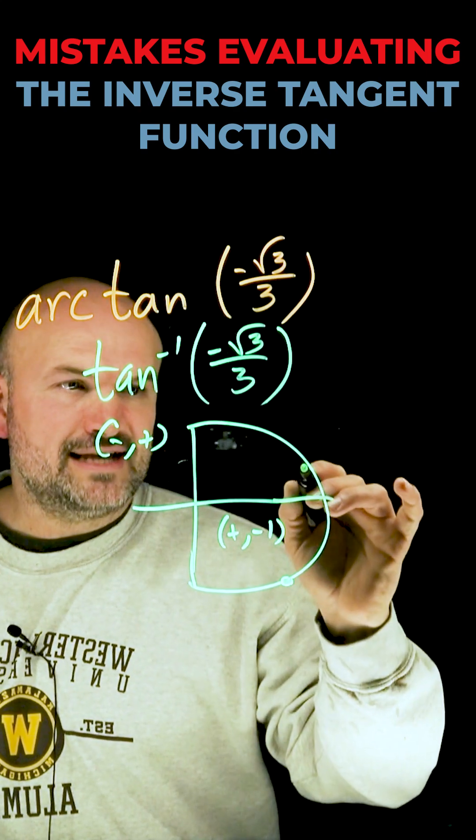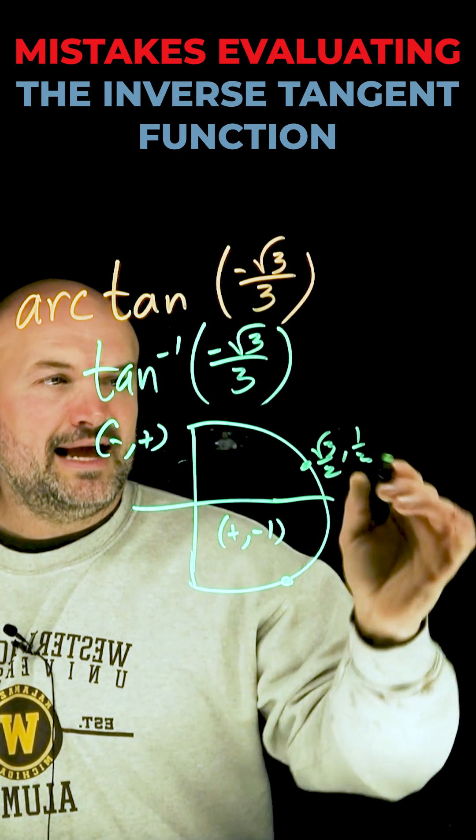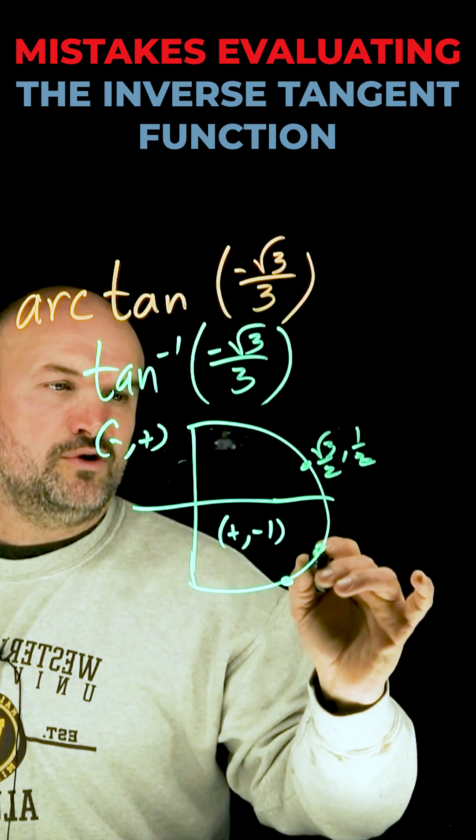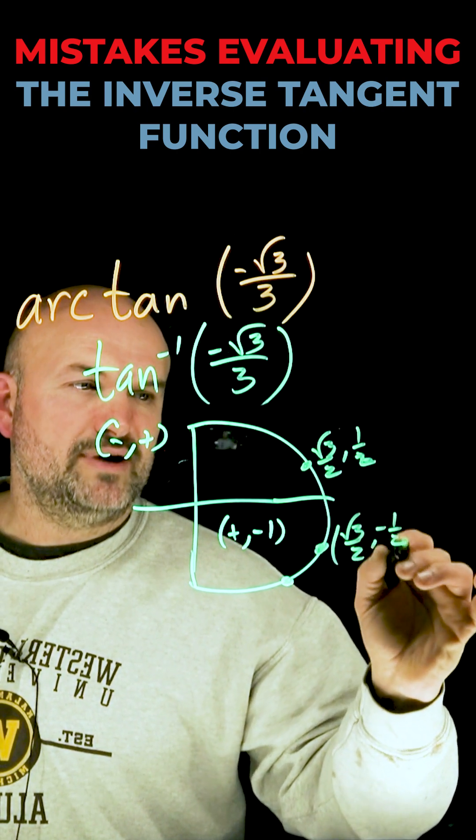So let's go ahead and take a look at angles in the first quadrant, square root of 3 over 2 comma 1 half. And if we put that into the fourth quadrant, technically would be a square root of 3 over 2 comma negative one half.